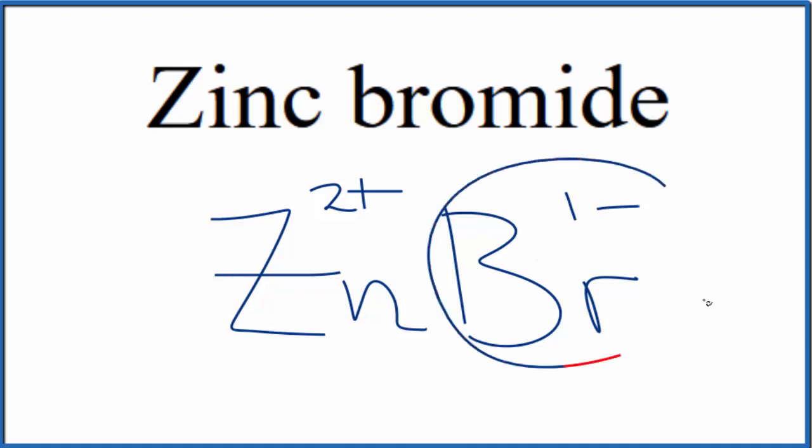If we had two of these, that would balance a charge. 2 times 1-, that would be 2-, that would balance the 2+, have a net charge of zero.